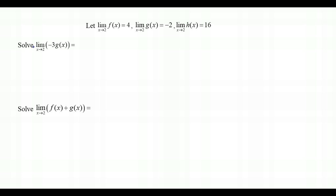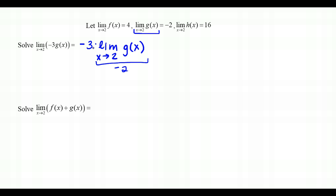For the limit as x approaches 2 of -3·g(x), the Constant Multiple Law lets us pull -3 outside the limit, giving -3 times the limit as x approaches 2 of g(x). From the given information, that limit equals -2. So we have -3 times -2, which gives a final answer of positive 6. It's important to show this intermediate step — just writing 6 won't receive full credit.